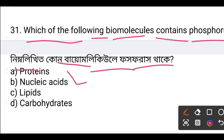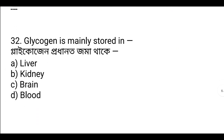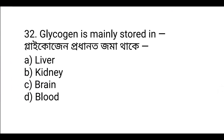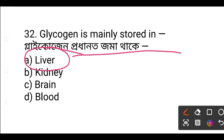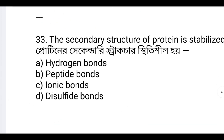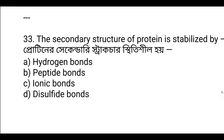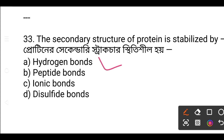Question: Where is glycogen mainly stored? Glycogen is stored in the liver and muscles. Question: What maintains the secondary structure of protein? The answer is hydrogen bonds — hydrogen bonds maintain the secondary structure of protein.